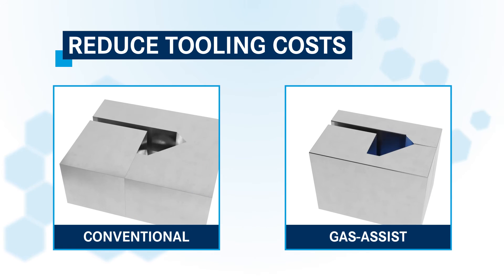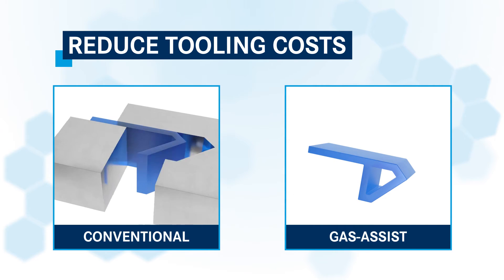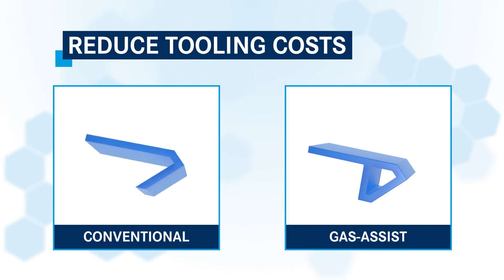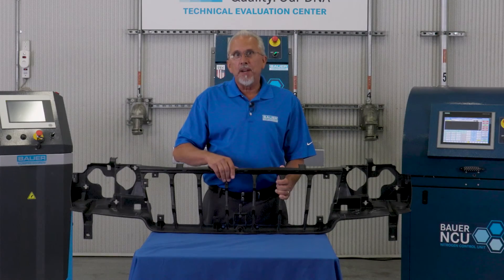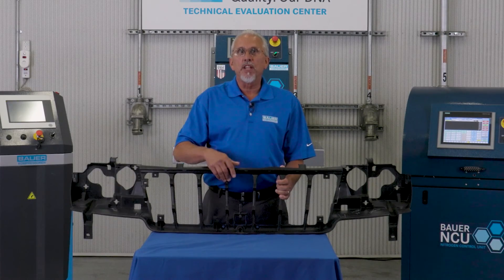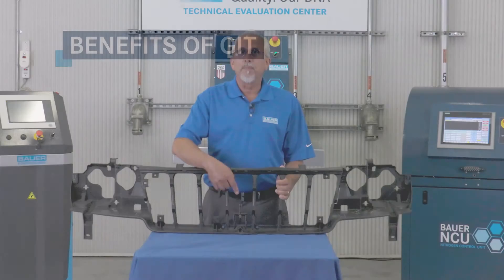It may also be possible to reduce tooling costs when designing a GIT mold. Slides and lifters may not be necessary to eliminate thick sections. In some instances, it is possible to eliminate expensive hot runner systems. This cheap headlight mounting module was molded with a single cold sprue, eliminating the need for an expensive hot runner system.